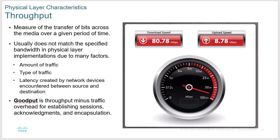Throughput is the measure of how many bits travel across a medium over a given amount of time. When you buy cable internet you get a download and upload speed. There are many factors that affect throughput — if you test to a server far away, you'll hit multiple providers' paths with other traffic, so you might not see exactly what your provider promises. Goodput is throughput minus overhead — all the headers and other communication on the network. While nice to know, goodput is never listed on device specs; it's always throughput.